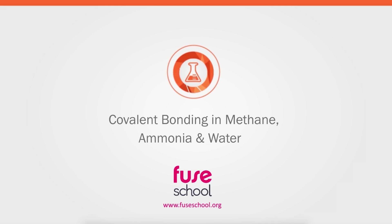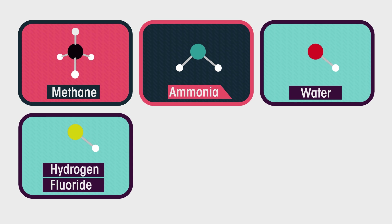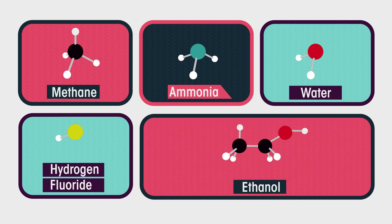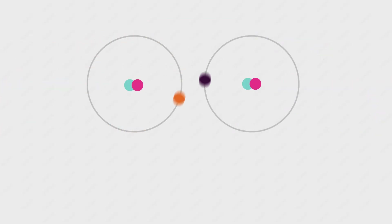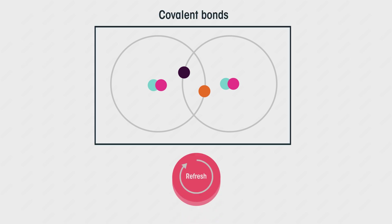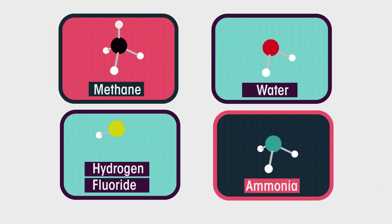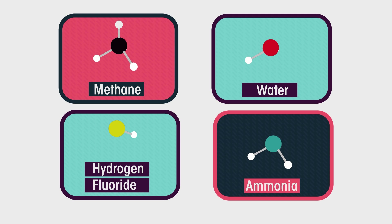This is a video about the covalent bonding in methane, ammonia, water, hydrogen fluoride, and ethanol. You should already know what covalent bonds are and how they form. If you need to refresh, you might want to watch our video on covalent bonds before you continue. So what are methane, ammonia, water, and hydrogen fluoride, and why are they special?